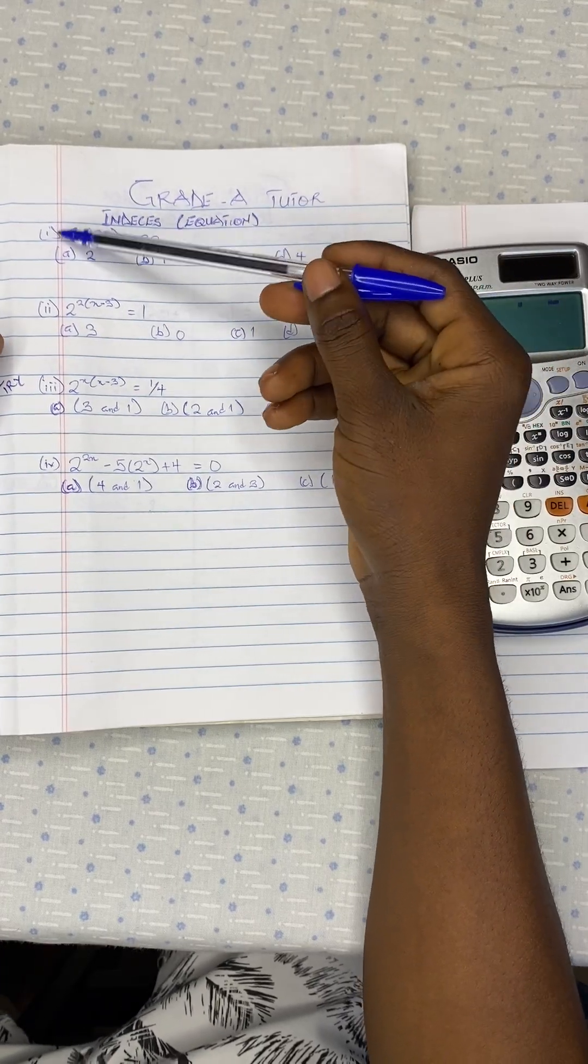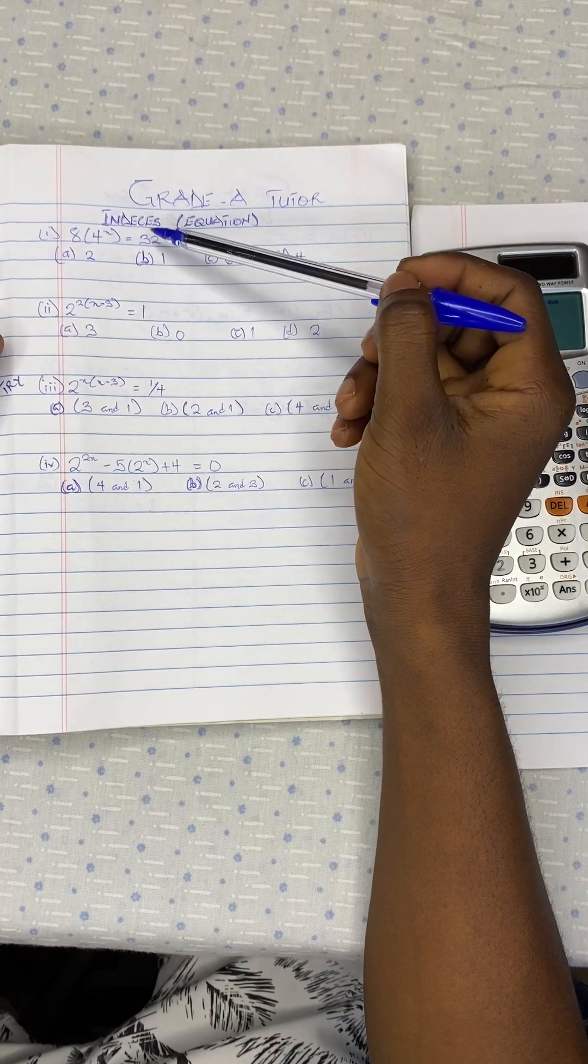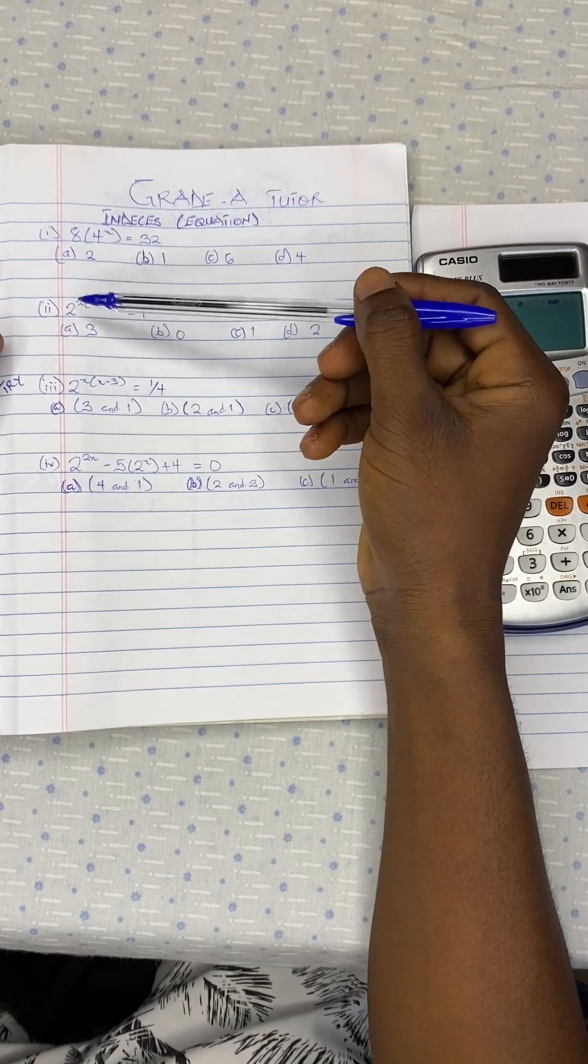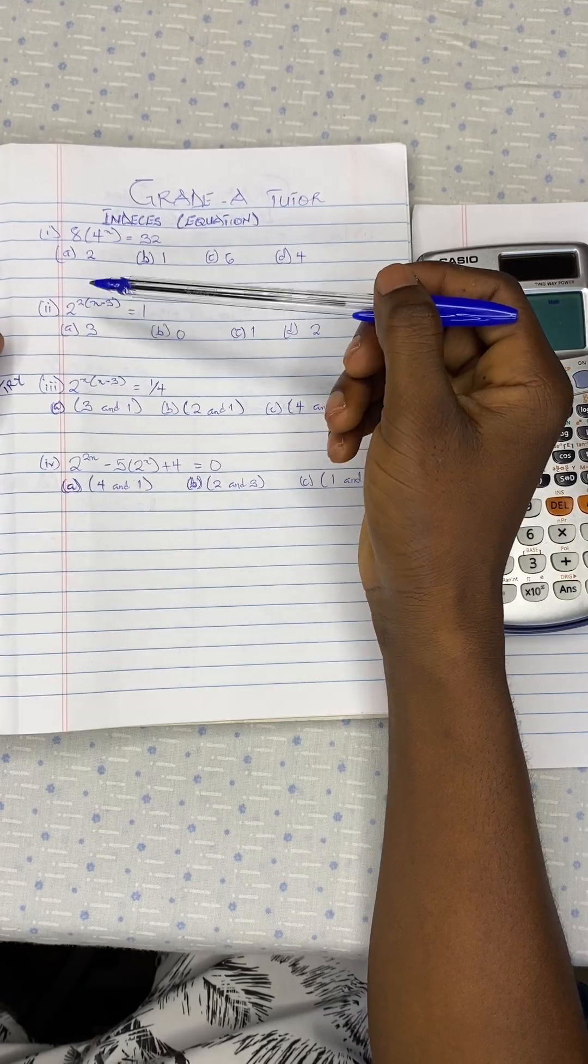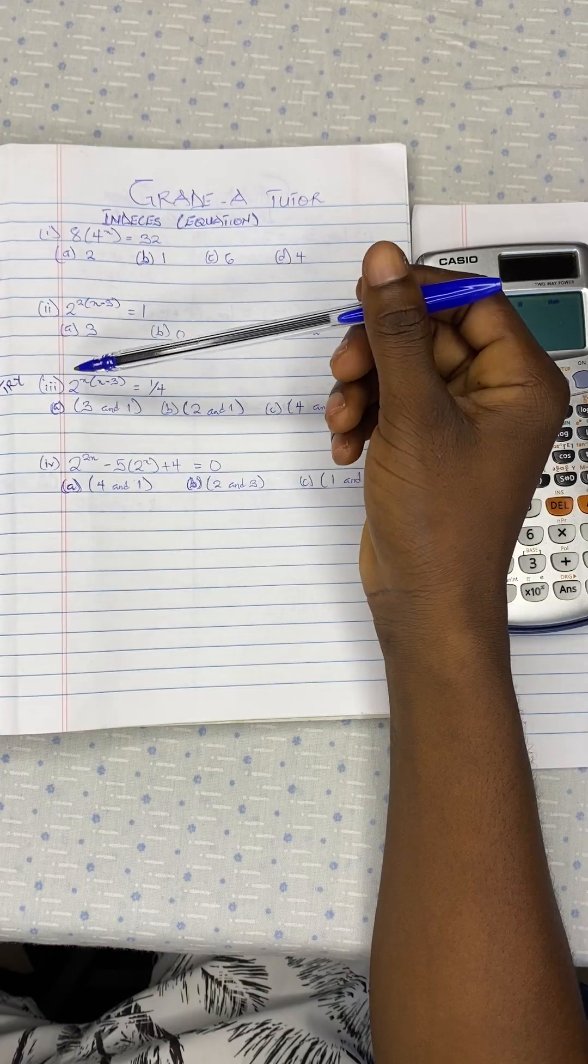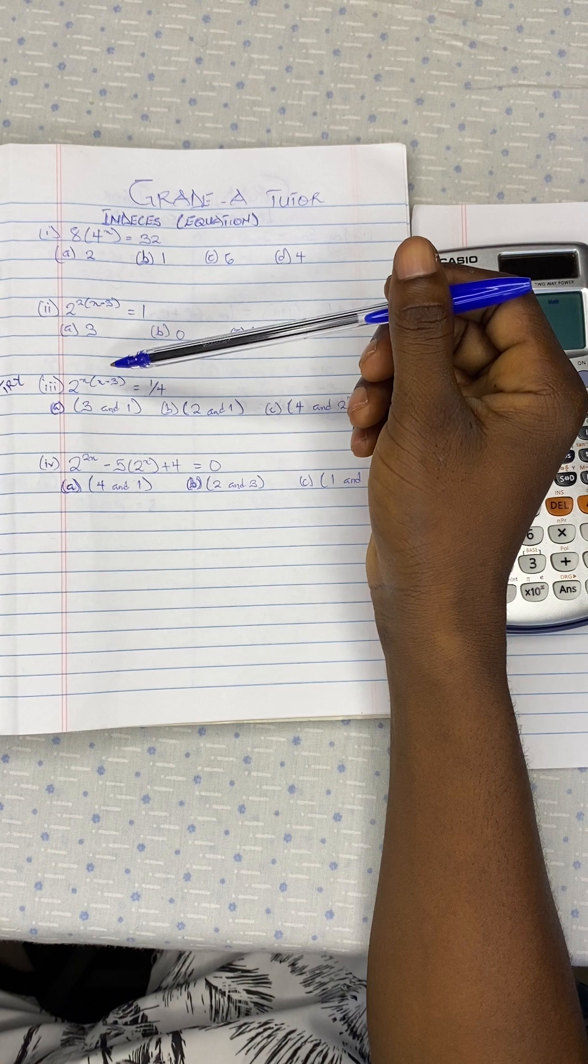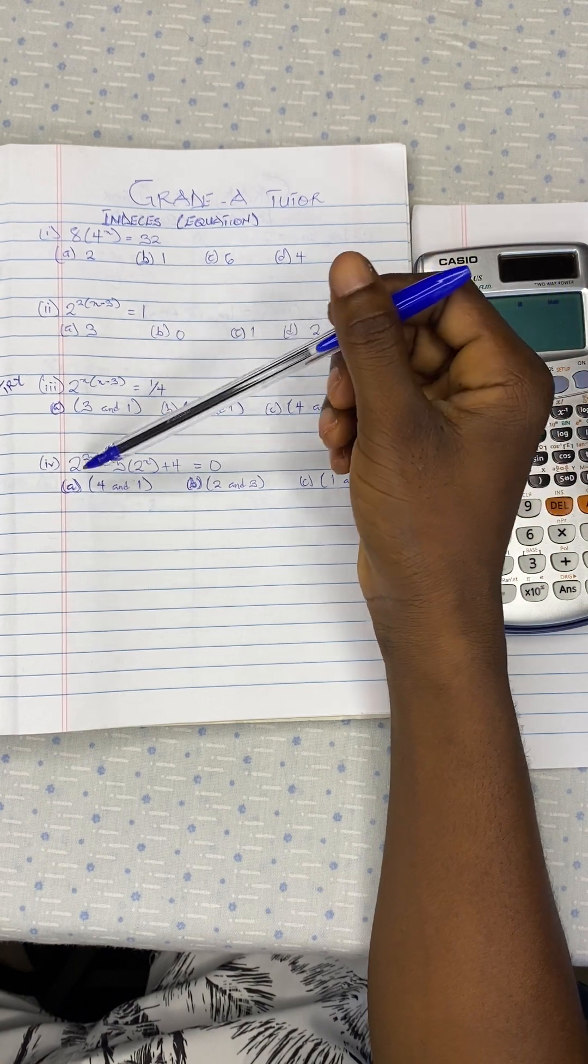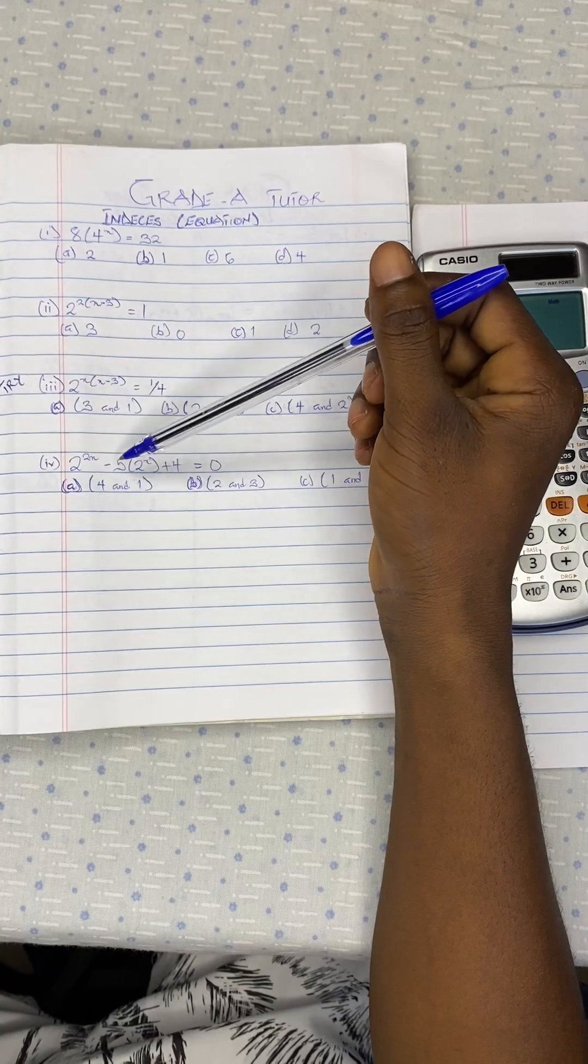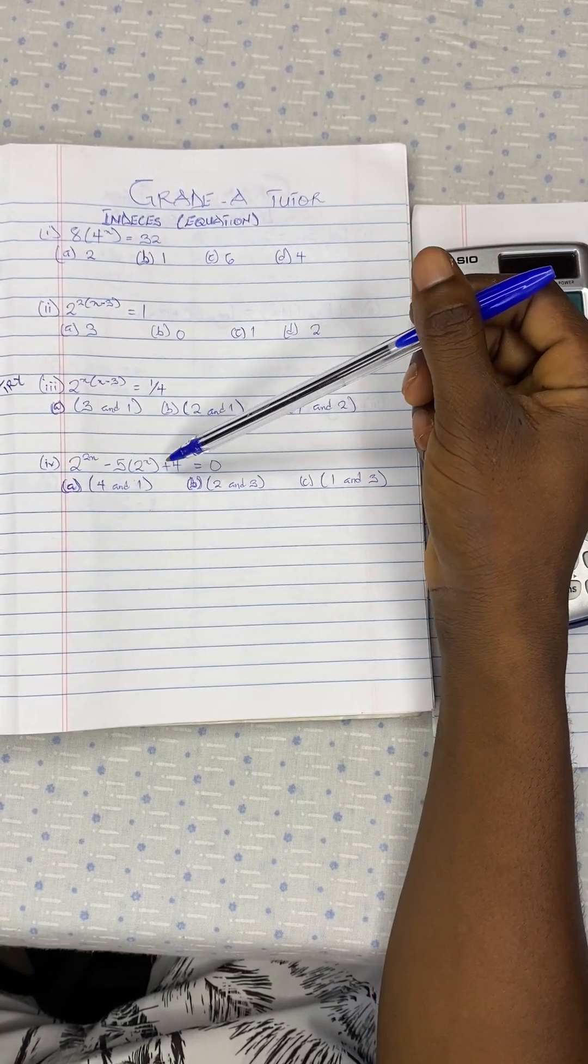We have question 1 to be 8 into bracket 4 exponent x equals 32. We also have 2 exponent 2 bracket open x minus 3 equal to 1. And question 3 is 2 exponent x bracket open x minus 3 equal to 1 and 4.